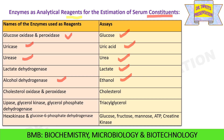Cholesterol oxidase and peroxidase activities can be measured in order to check cholesterol content present in serum. Lipase, glycerol kinase, and glycerol phosphate dehydrogenase enzyme activities are checked in order to estimate triacylglycerol content present in serum. Hexokinase and glucose-6-phosphate dehydrogenase enzyme activities are checked in order to estimate glucose, fructose, mannitol, ATP and creatine kinase present in serum.